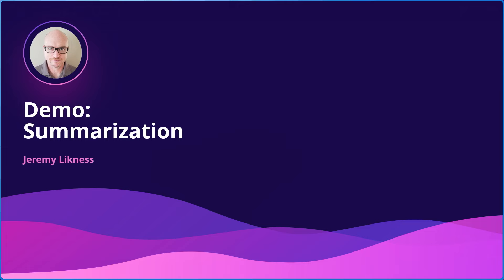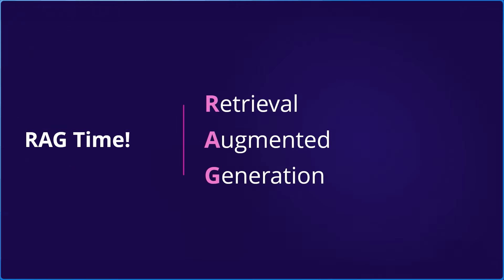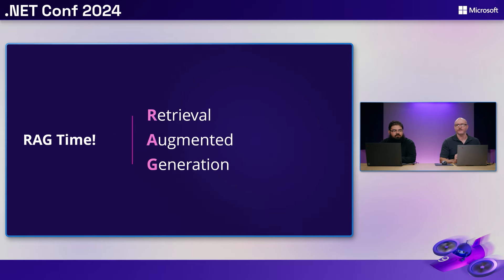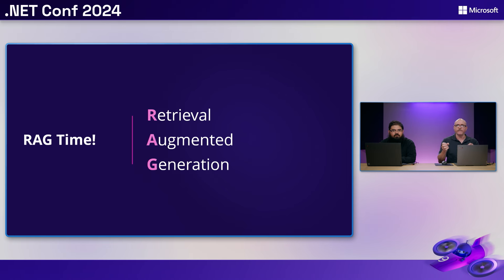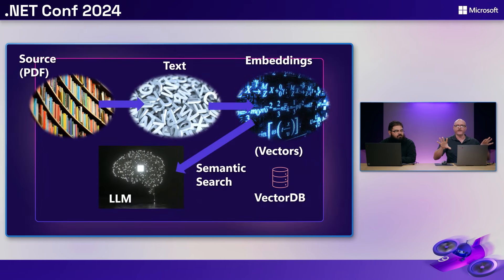Now I'm going to take it a step further using retrieval-augmented generation, or RAG. All that means is I take some present data, give it to the model as part of my prompt, so it has extra context to act on. For example, the model doesn't know about my product catalog, but if I use RAG I can give it information from the catalog to help answer questions. You start with a source of data.